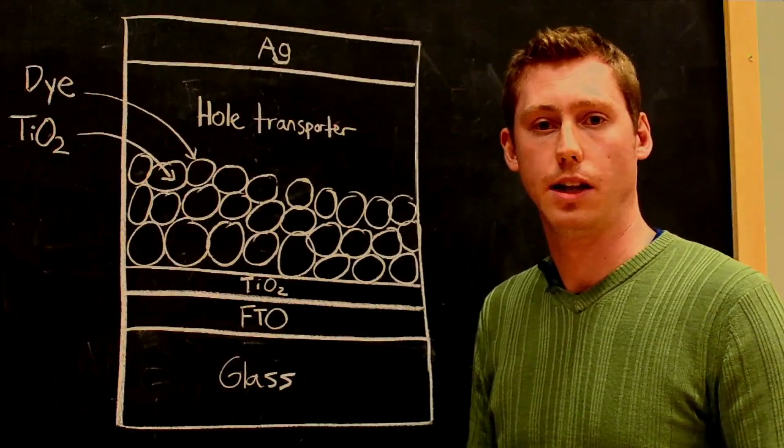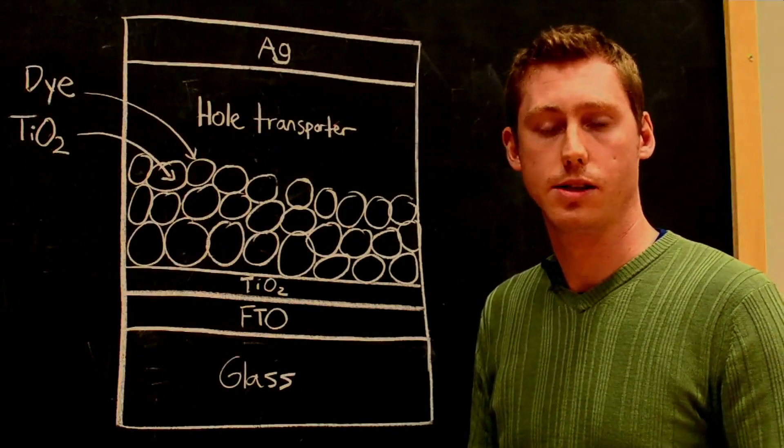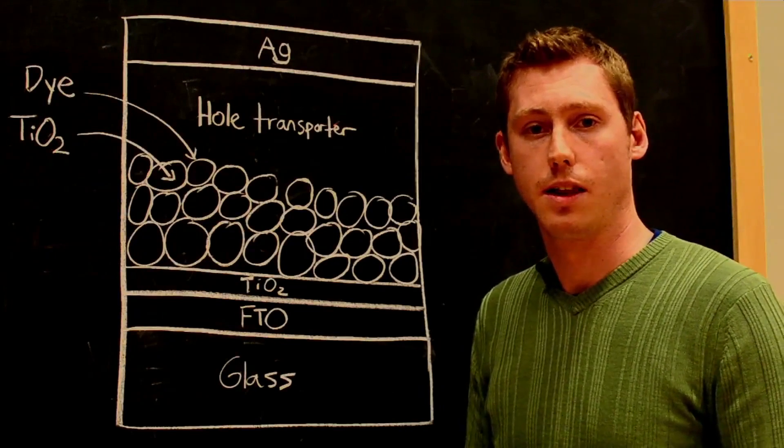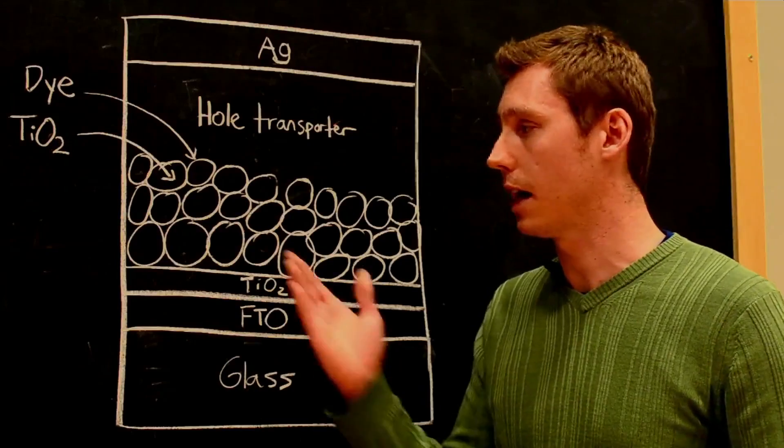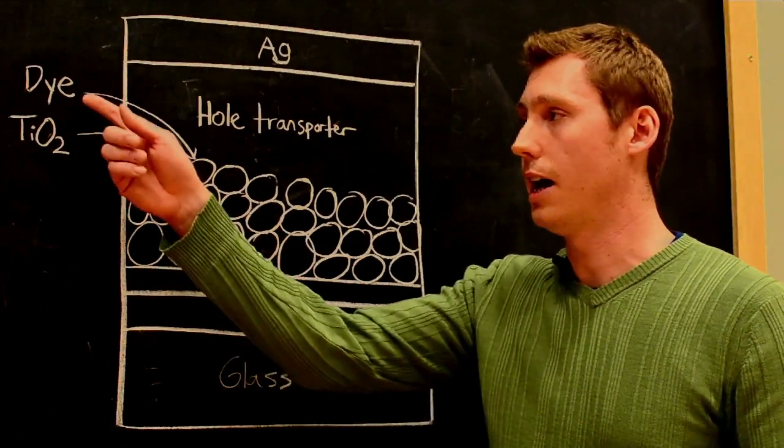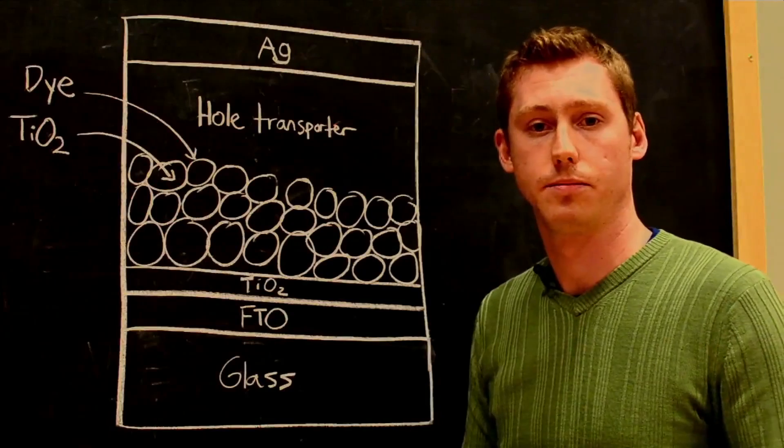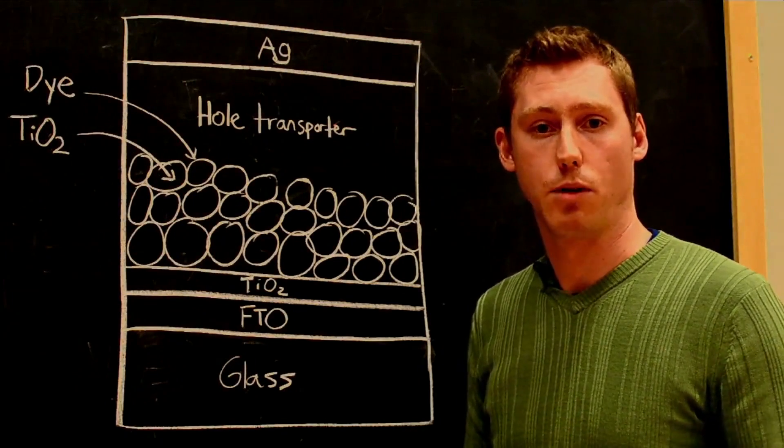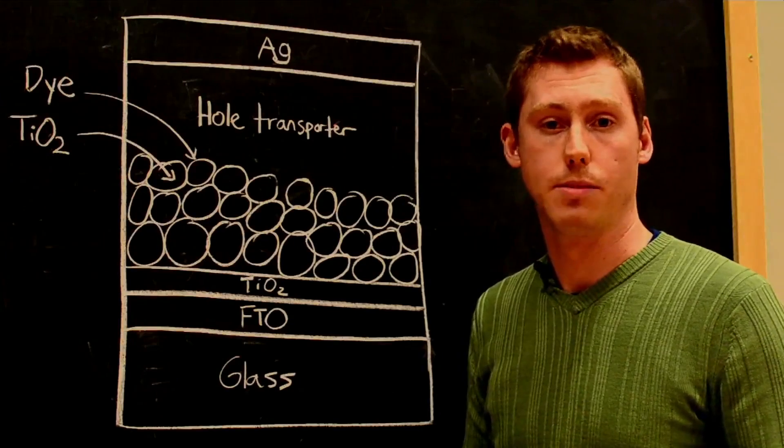To prevent this problem, the liquid electrolyte was replaced with a solid-state organic hole transporter spiro-OMeTAD. The first high-performance solar cells using perovskites used exactly this architecture, where the dye is simply replaced with the perovskite. Using a methyl ammonium lead halide perovskite, efficiencies up to 9% were achieved.